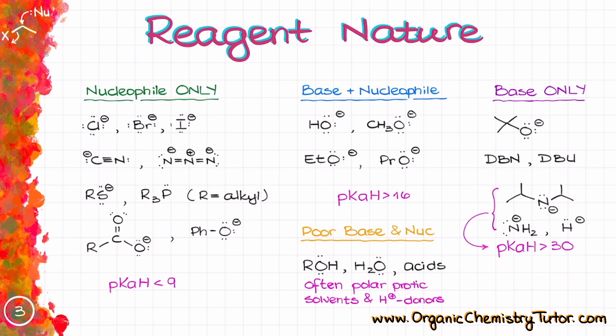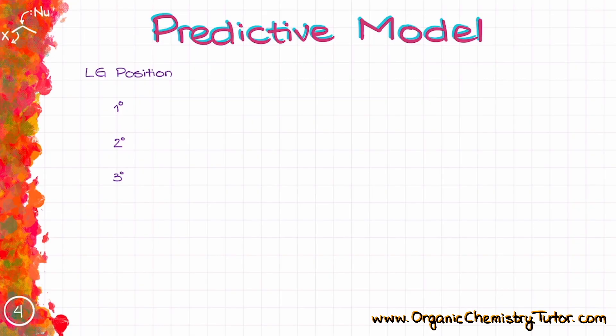Overall, I would say it's a really good idea to memorize these categories. So I suggest you copy them down for future reference because we are going to need them. Now, when it comes to the leaving groups, they can be primary, secondary, or tertiary.